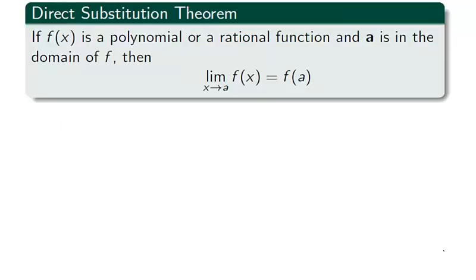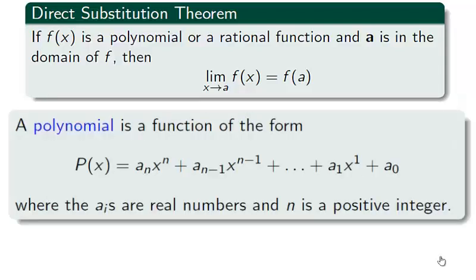With the direct substitution theorem, we are able to calculate the limit of two of the most familiar functions to many students, polynomials and rational functions. If an actual value exists, then the limit and the actual value coincide. Remember, a polynomial is made up of x powers and constants, summed and multiplied together. The domain of a polynomial is all real numbers. Therefore, a polynomial has a limit at all points, and this limit coincides with the actual value of the polynomial.